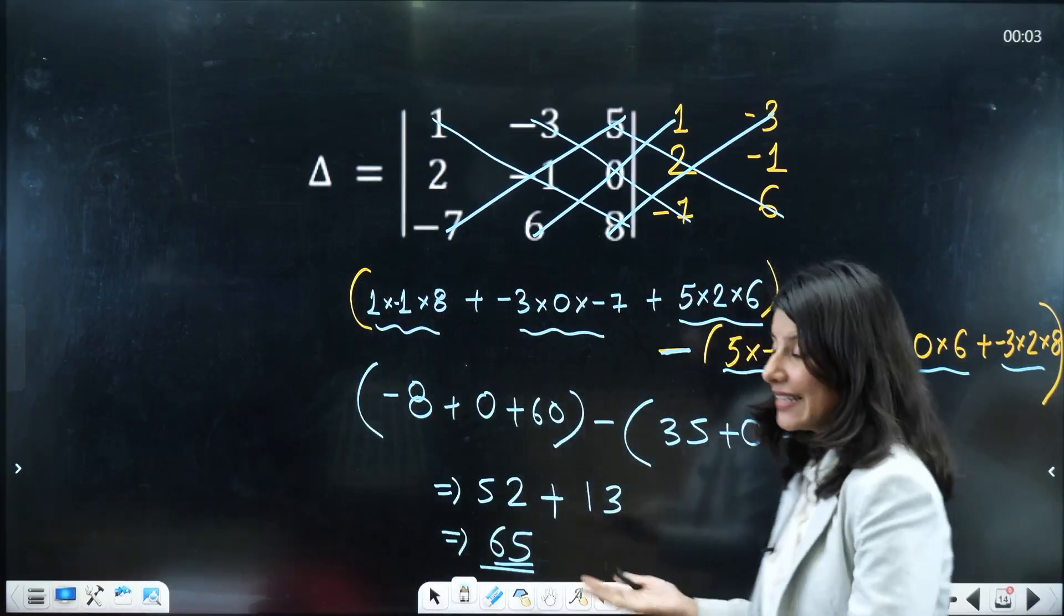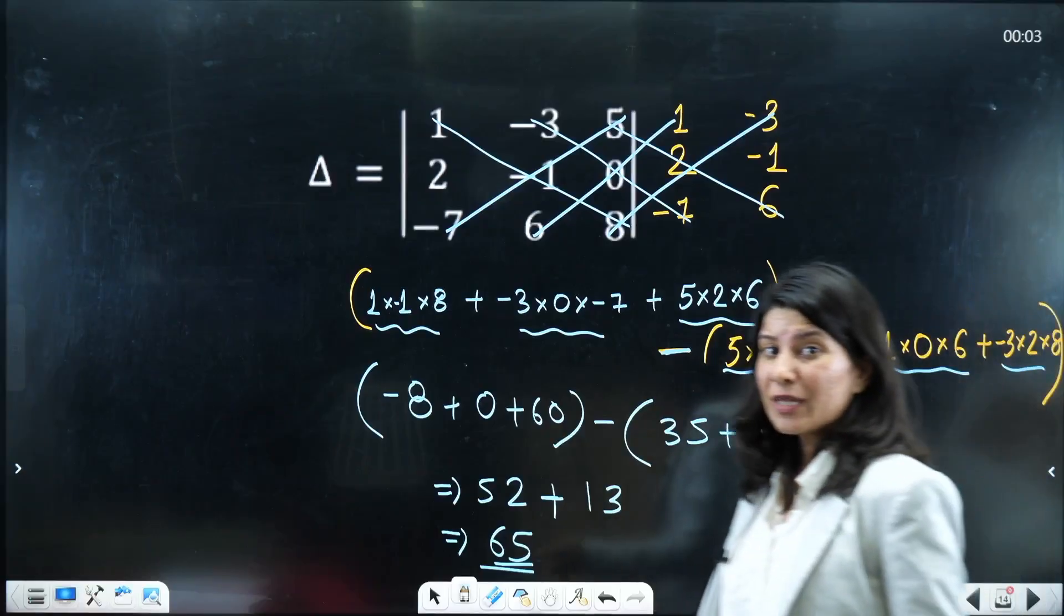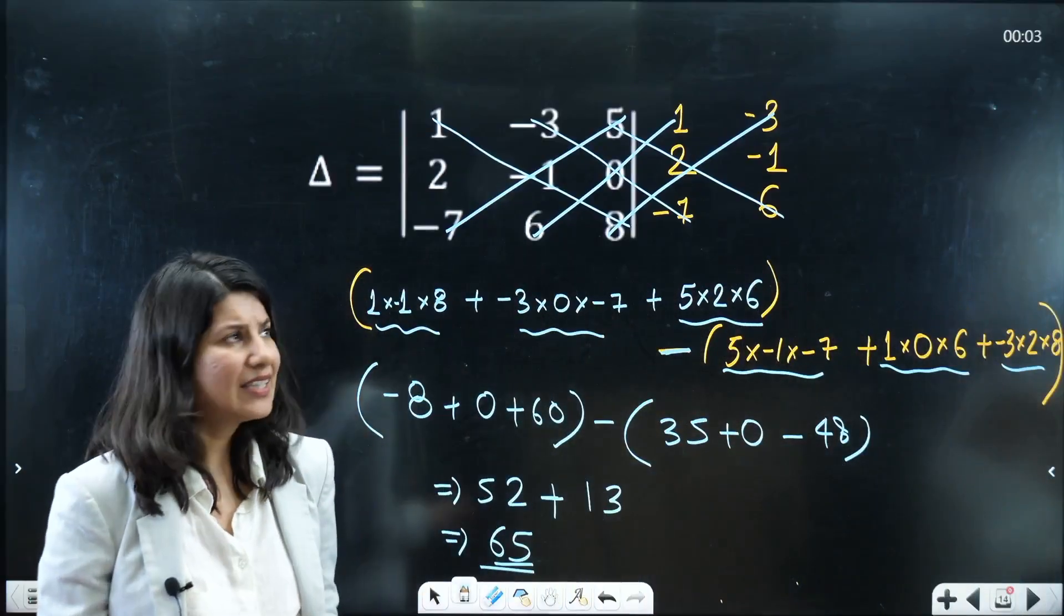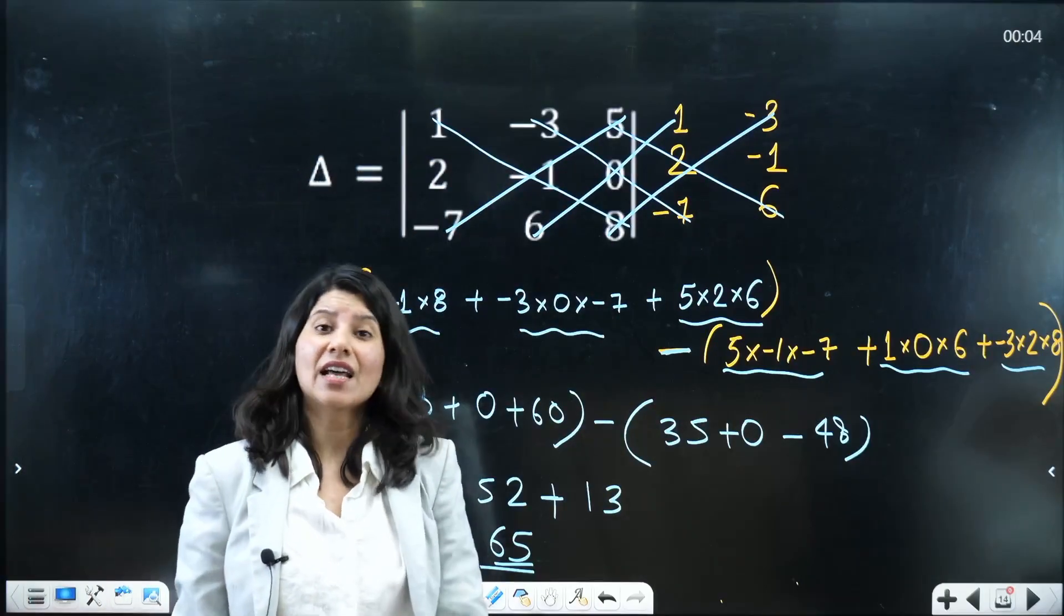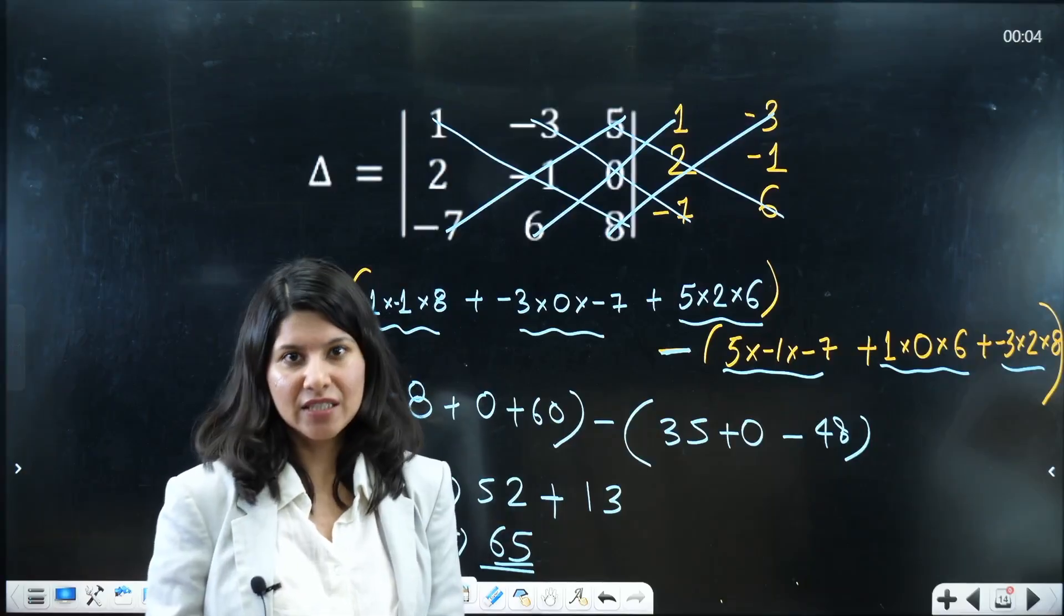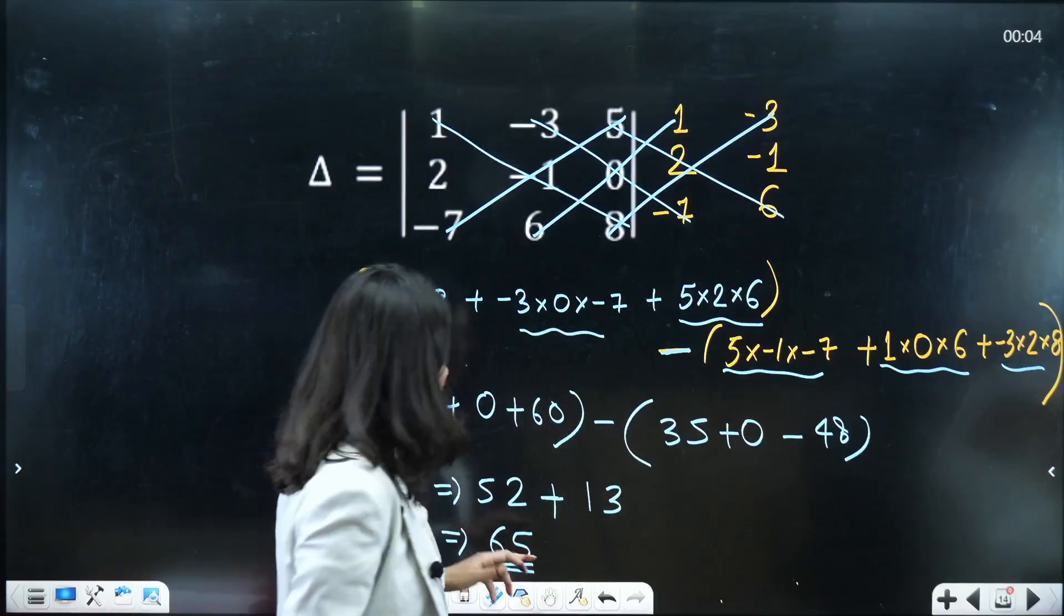Now you must be wondering, ma'am, this method, we are comfortable with the very first method. I agree. But in that method, the expansion along row 1, there are high chances that you might commit a mistake.